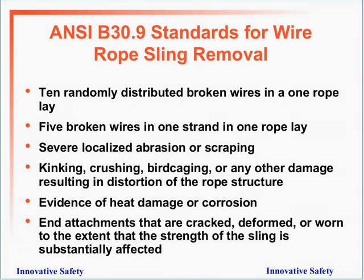Conditions requiring removal of wire rope slings from service include: ten randomly distributed broken wires in one rope lay, five broken wires in one strand in one rope lay, severe localized abrasion or scraping, kinking, crushing, birdcaging, or any other damage resulting in distortion of the rope structure, evidence of heat damage or corrosion, and end attachments that are cracked, deformed, or worn to the extent that the strength of the sling is substantially affected — all as laid out in the B30.9 standard.